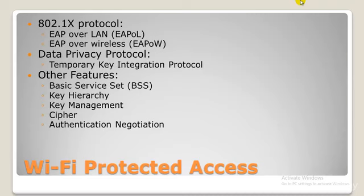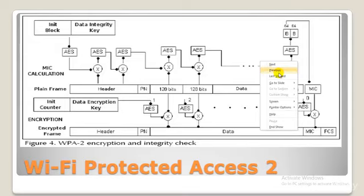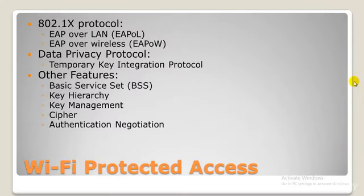TKIP was later superseded by AES — Advanced Encryption Standard — which is used nowadays. Despite the significant improvement of WPA over WEP, the ghost of WEP still haunted WPA. TKIP, a core component of WPA, was designed to be easily rolled out via firmware upgrades on existing WEP-enabled devices. As such, it had to recycle certain elements used in the WEP system, which ultimately were exploited again, becoming a backdoor for hackers.